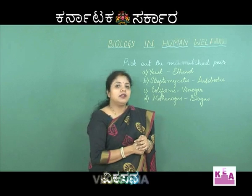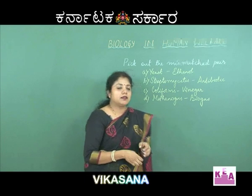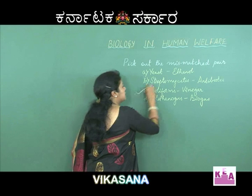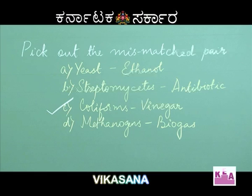The only wrong pairing here is coliform and vinegar. So option C is the wrong pairing and therefore the correct answer to this question.